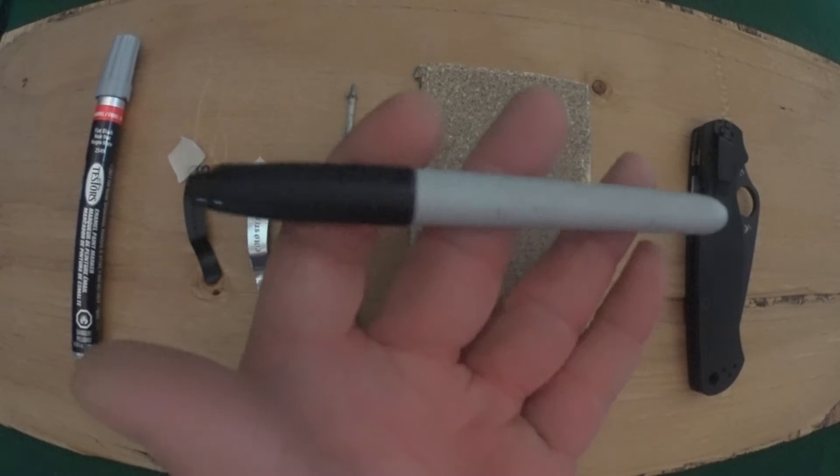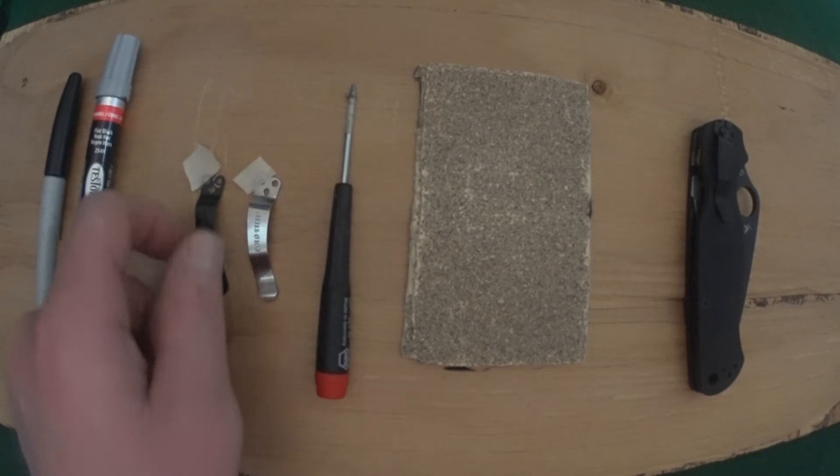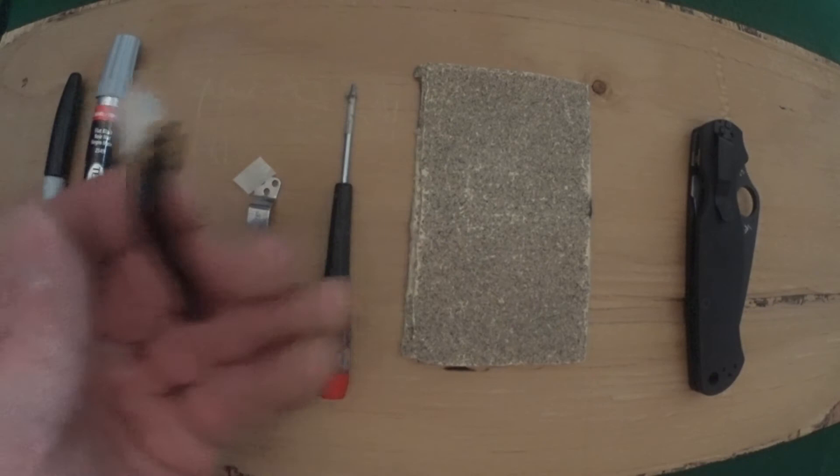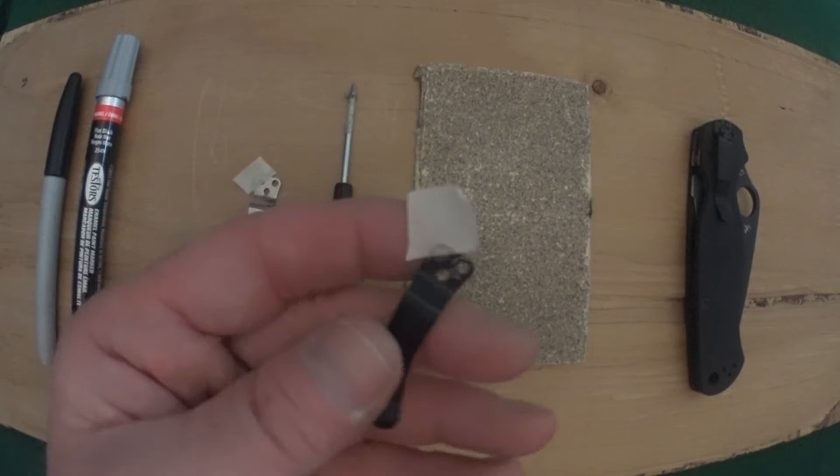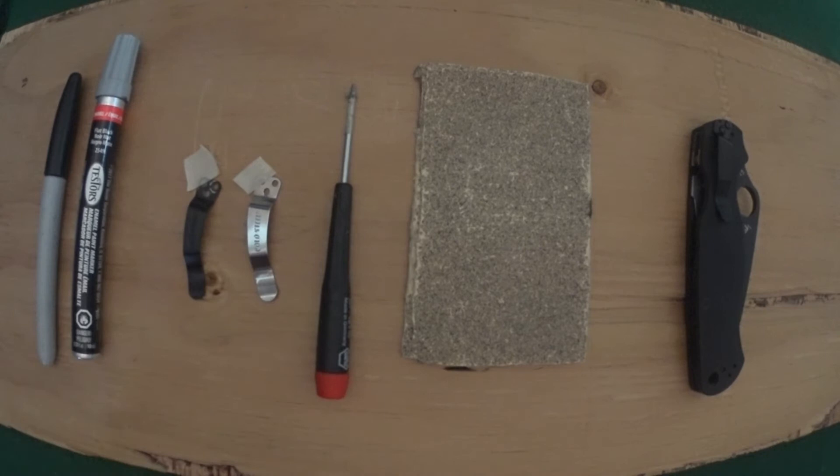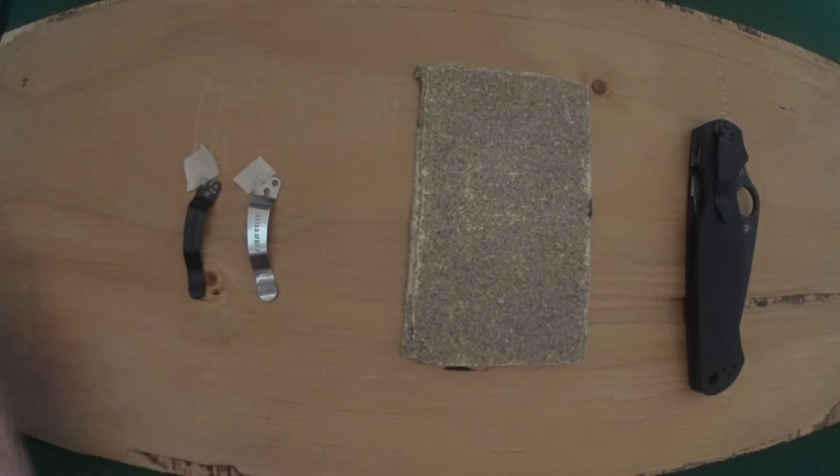If you don't have a paint marker, you can just go ahead and use just a black Sharpie. And what that's going to be for is once you make the cut or you perform the sanding on the clip, you're going to want to have the marker to cover up, you know, to cover the exposed metal that's left over after you've made your cuts.